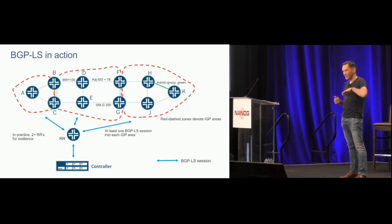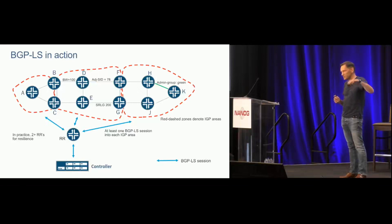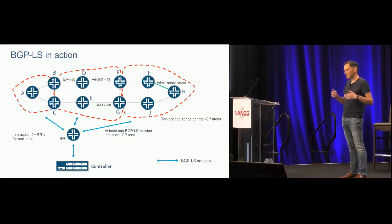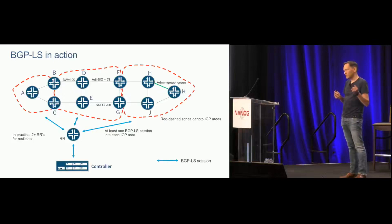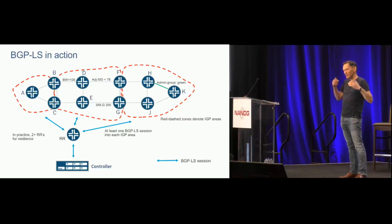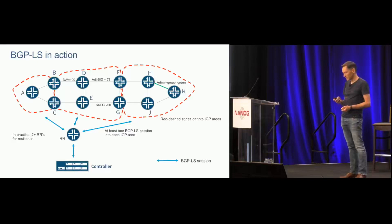One approach would be an IGP peering between the controller and each area, but the controller is probably not directly physically connected, so you'd need IGP adjacencies over GRE tunnels, which gets messy. Instead, you can use BGP-LS. A BGP-LS speaker takes the contents of the traffic engineering database and other IGP information, packages it into TLVs, and communicates those over BGP. By having a BGP-LS speaker in each region peering with route reflectors that peer with the controller, the controller can ingest all topology information network-wide, combining it into a unified end-to-end view to create end-to-end LSPs across a multi-domain topology — notoriously difficult in the distributed traffic engineering case.